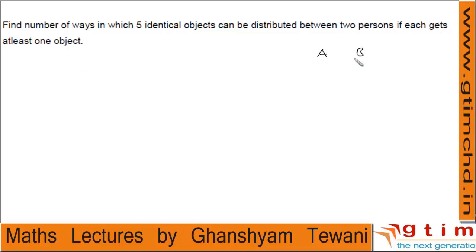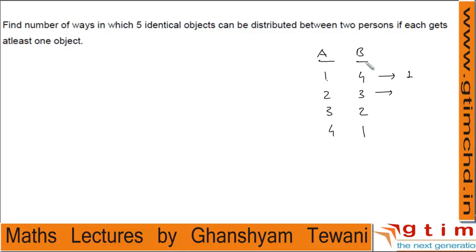Now suppose the two persons are A and B. The condition is each gets at least one object. The possible distributions are: A gets 1, B gets 4; A gets 2, B gets 3; A gets 3, B gets 2; A gets 4, B gets 1. Now, A is getting one object out of five identical objects — how many ways can one choose one object from five identical objects? One way. Remaining four go to B. Similarly, selecting two, three, or four identical objects always gives one way. So we have 1, 1, 1, 1 — four times — giving four distribution ways.